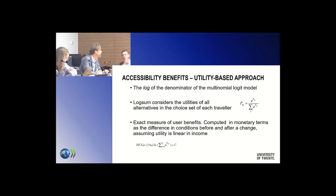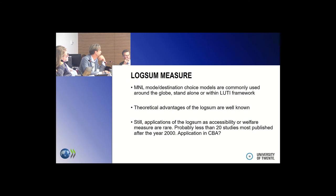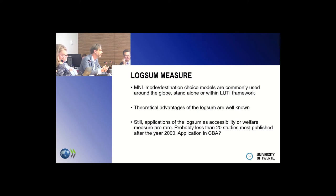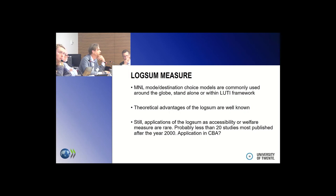The same story applies to random utility-based models. The most well-known is the logsum — the denominator of the multinomial logit model. It is an exact measure, and if applied within a LUTI framework, it does take into account destination utilities. Still, the number of applications is actually quite few — maybe 20 or 30, most of them published after the year 2000. And when you go from academic literature into actual cost-benefit analysis applications, the number is much, much smaller. I found only one recent paper describing a logsum application in cost-benefit analysis. So again, we know some of these more advanced methods, but they do not trickle down to practice.